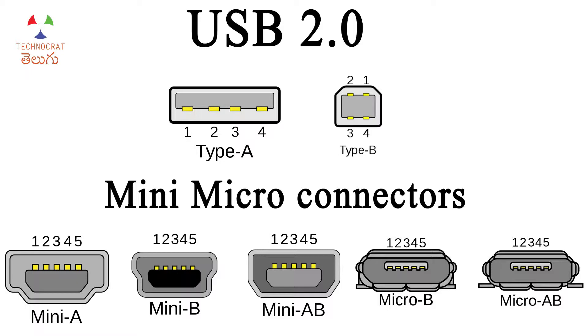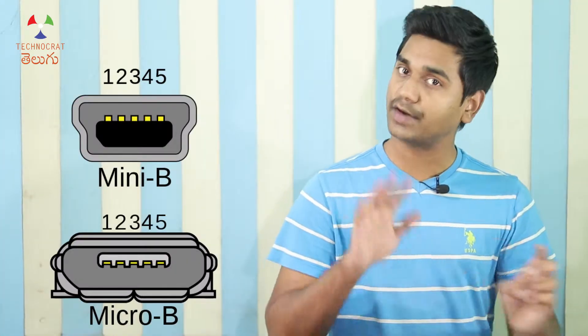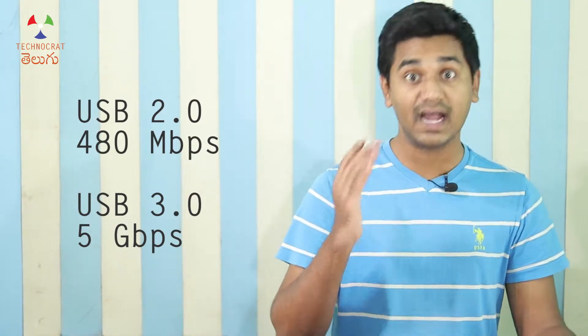These connector types are: Mini A-type, Mini B-type, Mini AB-type, Micro B-type, and Micro AB-type. The Mini B-type has been used for a long time in many phones and MP3 players. But now many devices use Micro B-type connectors. With USB 2.0 standard, Mini B-type and Micro B-type connectors have 5 pins.